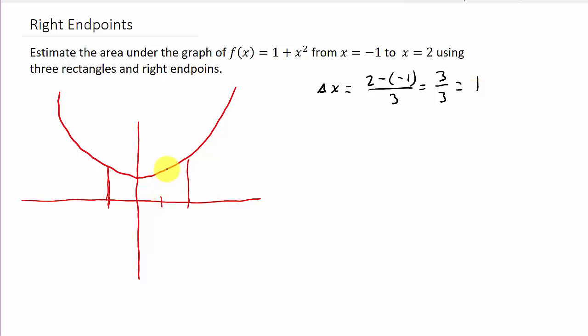So we're going to have a rectangle here and right here on the axis. Okay, so here's my three rectangles. One, two, three. And they want us to use right endpoints. So that means we'll come to the right point and draw us a rectangle.